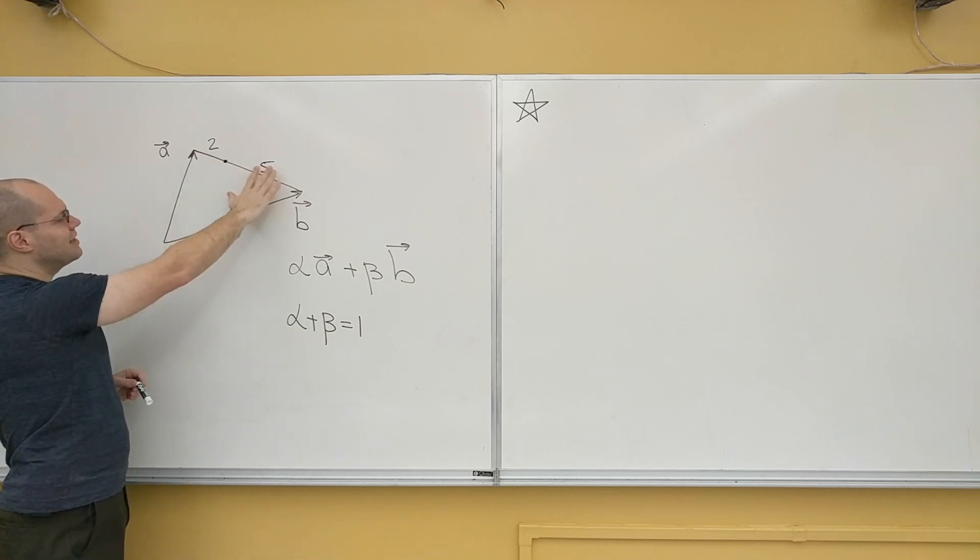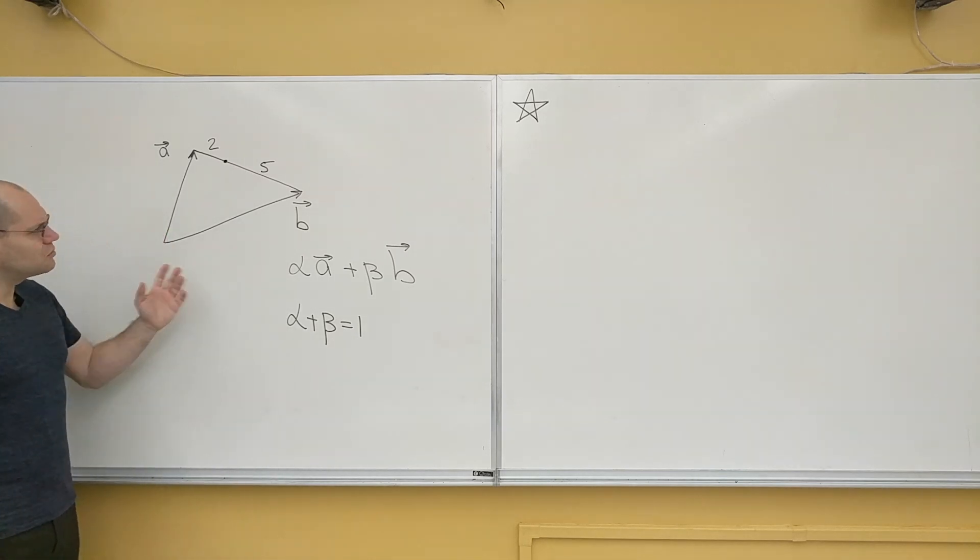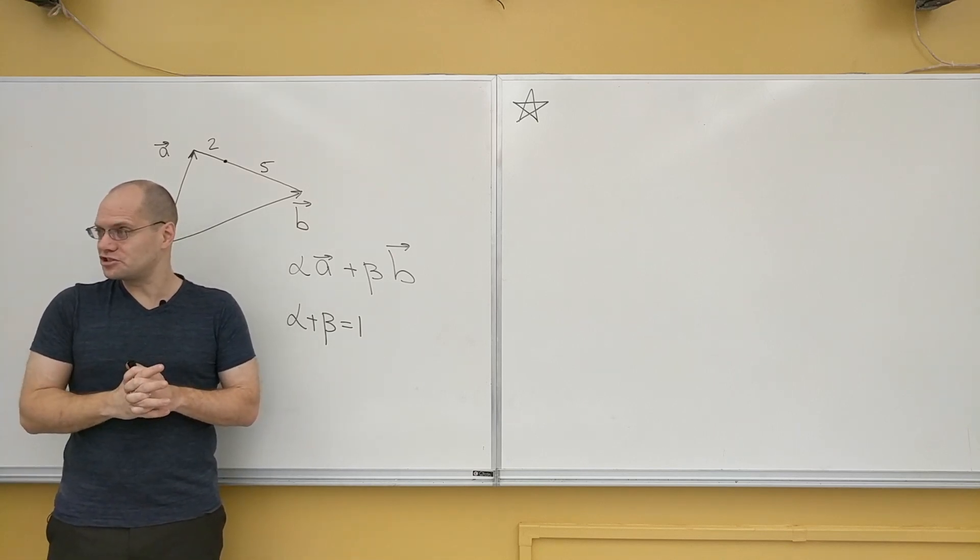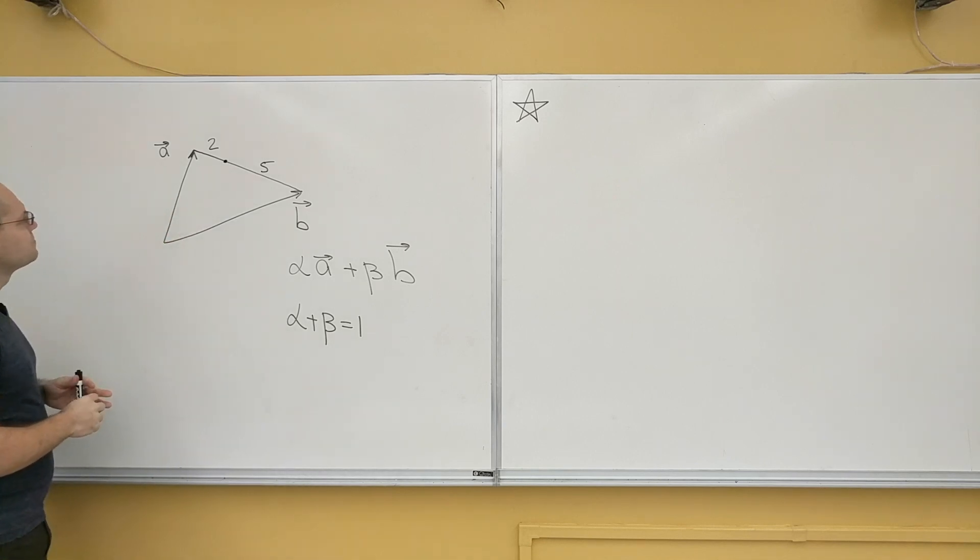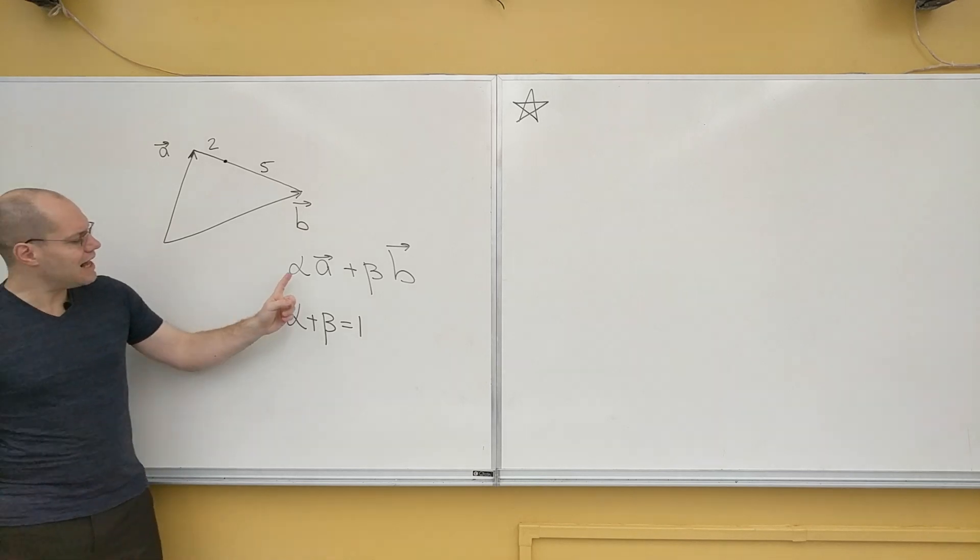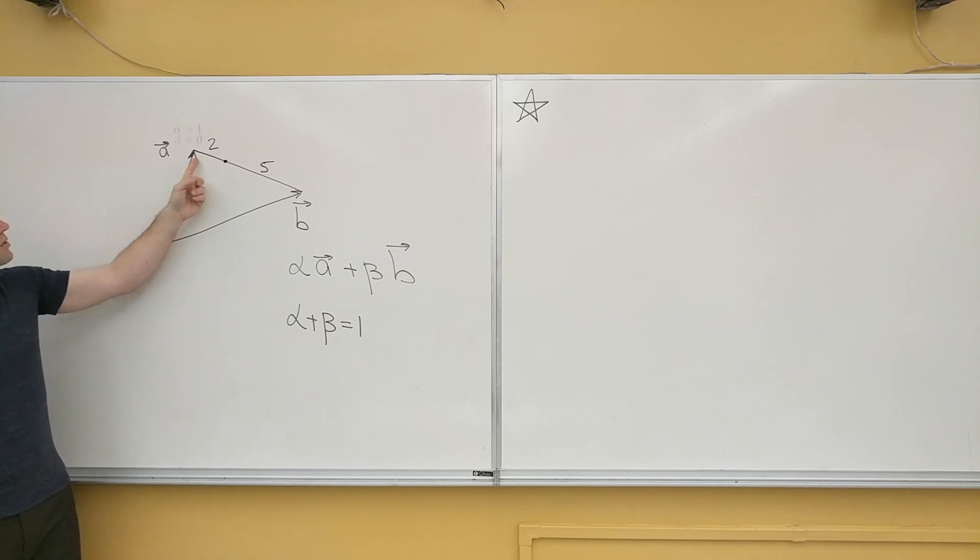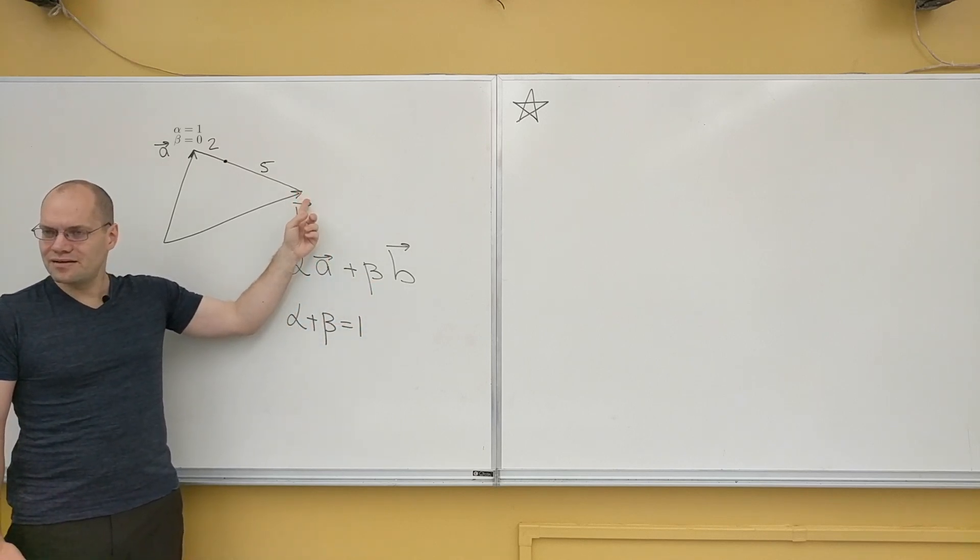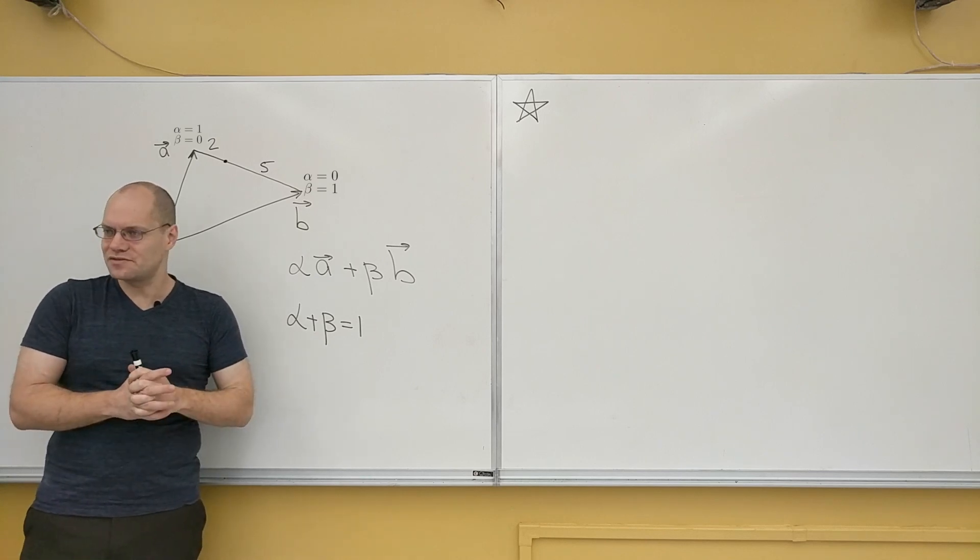So first, let me figure out alpha and beta for this problem, just on an intuitive level. And then I think there's a way to do it if you're not 100% confident in your intuition. But here's how my intuition goes, and it's convincing enough for me. If we were to take alpha equals 1 and beta equals 0, then we're right at A. If we take alpha equals 0 and beta equals 1, then we're right at B. And I think that's already beginning to give us a sense of where things fall, depending on the values of the coefficients.